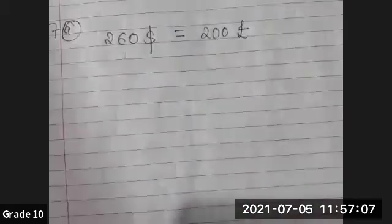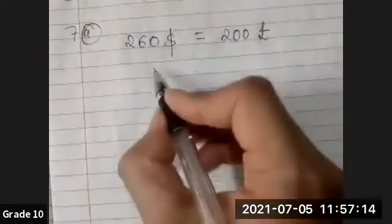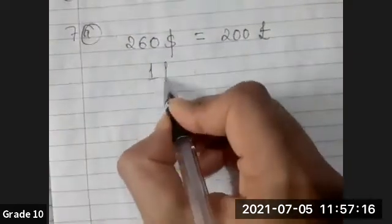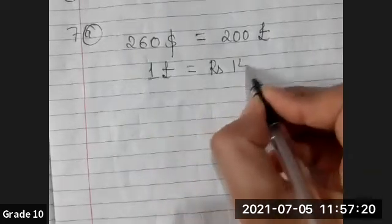According to the second part of the question, let me show you, there is written one pound is exchanged for rupees 148. This can be understood as: one pound equals rupees 148.